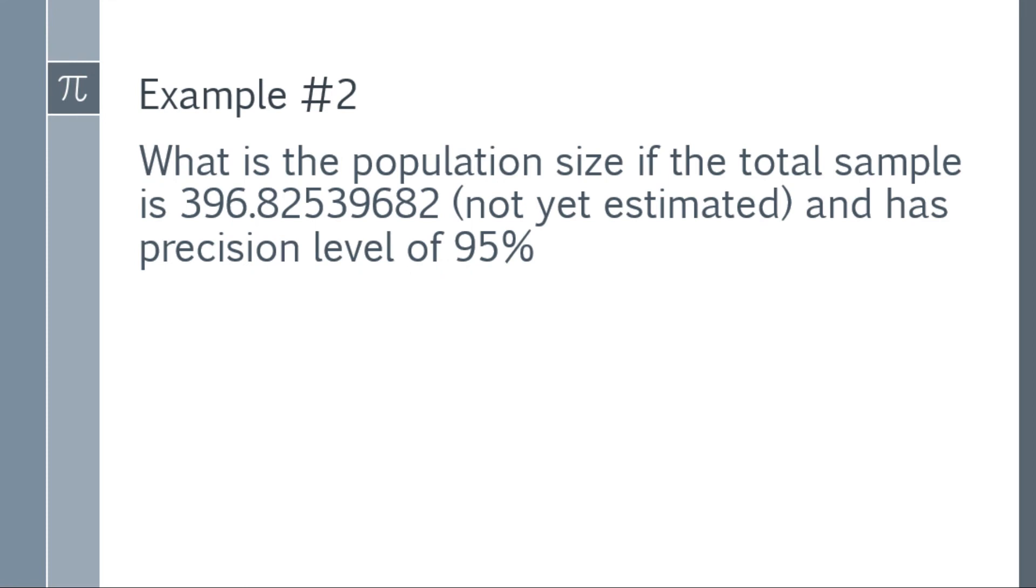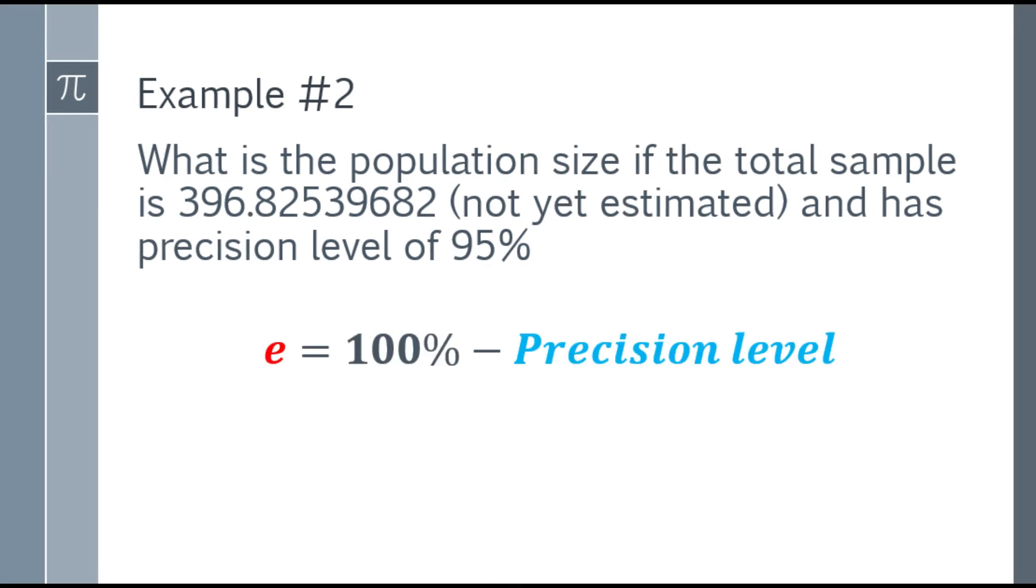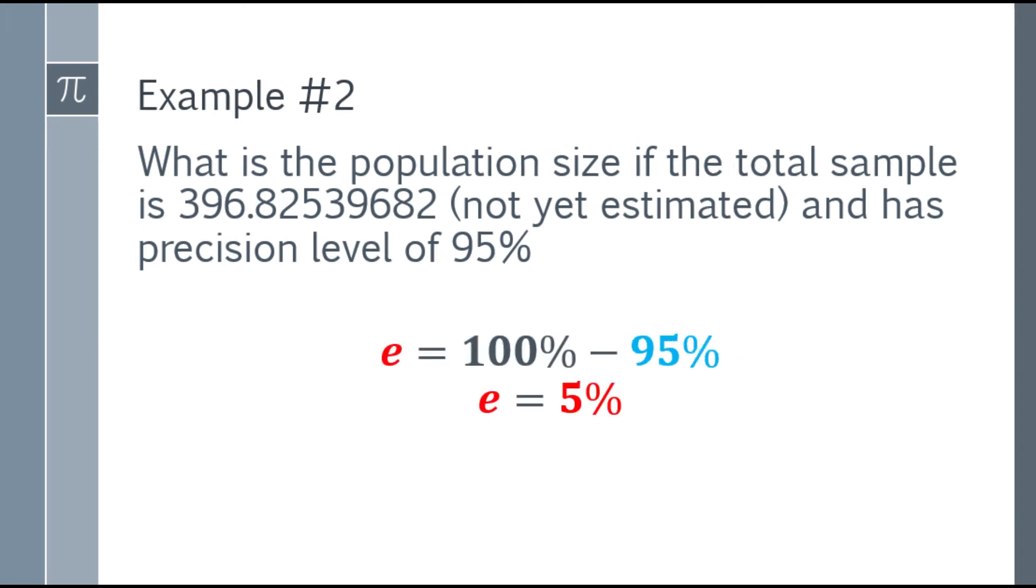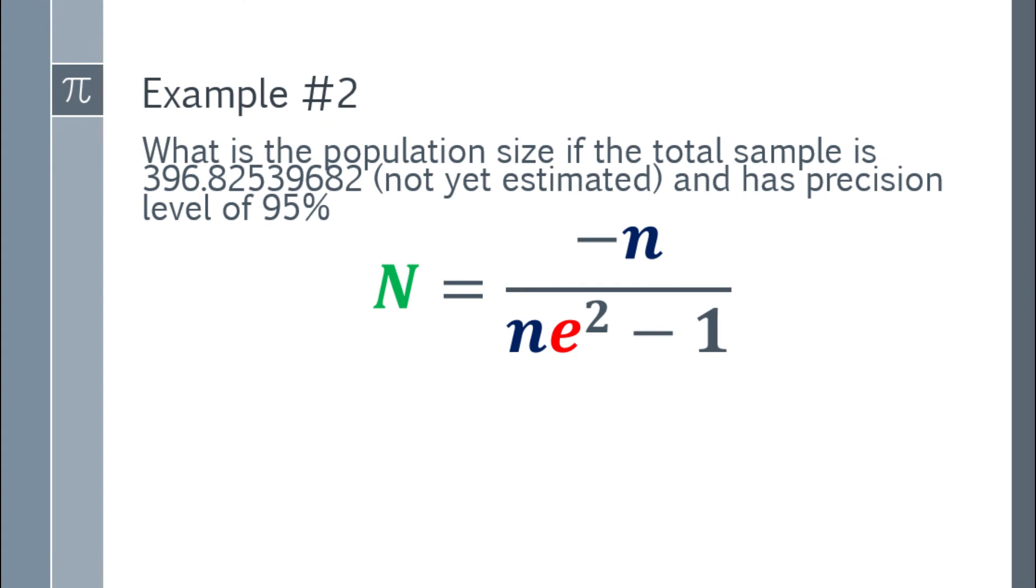Example number two: What is the population size if the total sample is 396.82 and so on, not yet estimated, and has precision level of 95%? We don't have the margin of error. However, we have the precision level. To find the margin of error, we have the formula: margin of error equals 100% minus the precision level. That will be 100% minus 95% equals 5%.